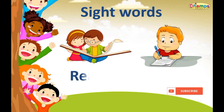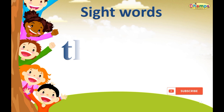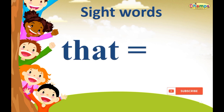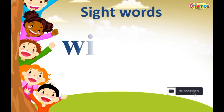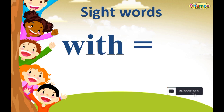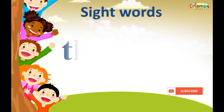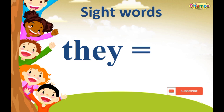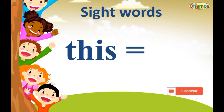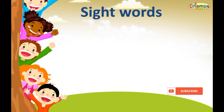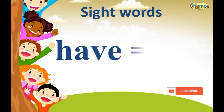Sight words help us in reading and writing. That: yeh hai. With: saath. They: we. This: yeh hai. Have: rakhta.